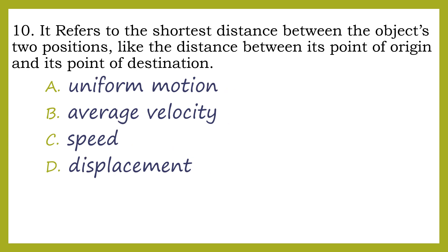Number 10. It refers to the shortest distance between the object's two positions, like the distance between its point of origin and its point of destination. A. Uniform motion. B. Average velocity. C. Speed. D. Displacement.